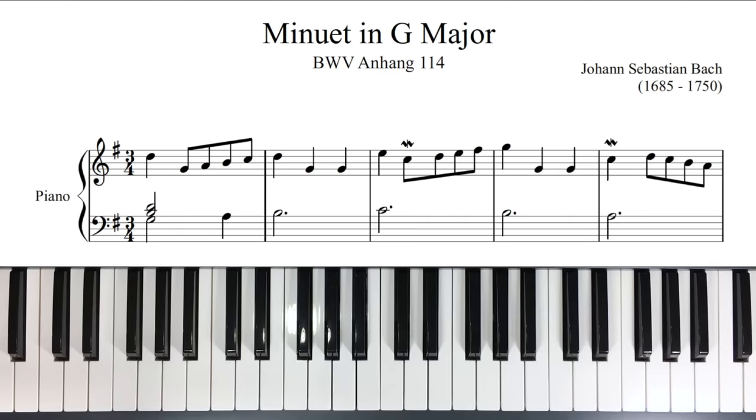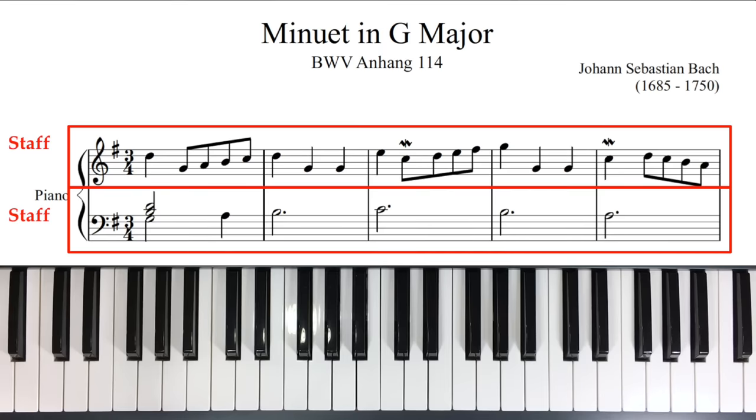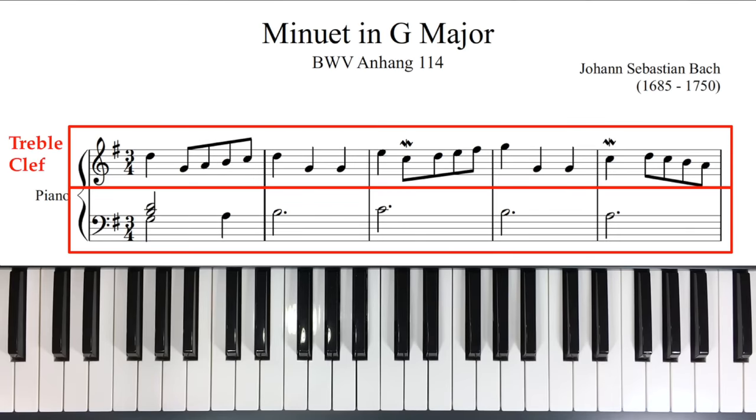So notice these notes fall into two areas, a top area and a bottom area. Each of these areas is called a staff, the foundation upon which notes are drawn. Now notice both staffs have a different sign. The top sign is called treble clef, and the bottom sign is called bass clef.